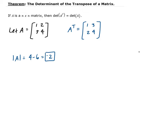Okay, the determinant of A transpose is going to be 4 minus 6 as well. So that's going to give us negative 2.